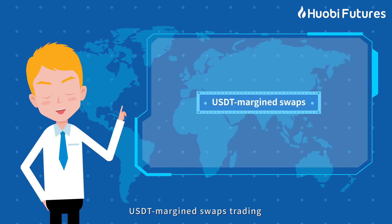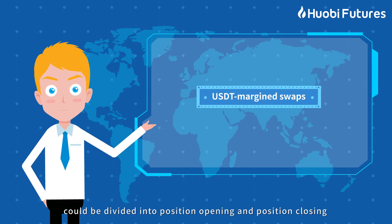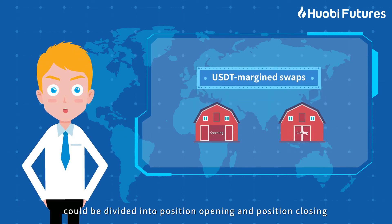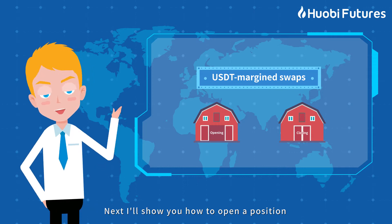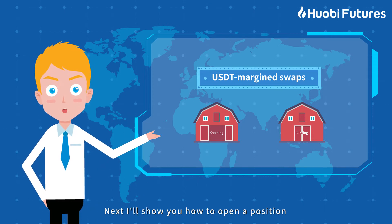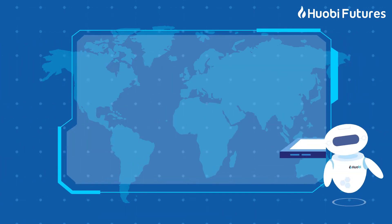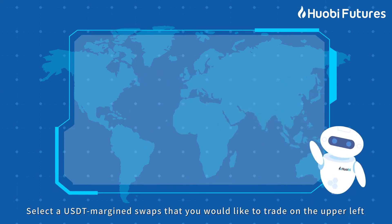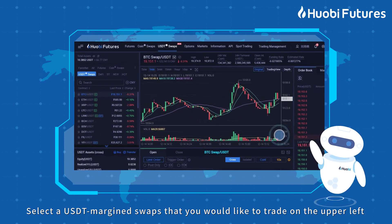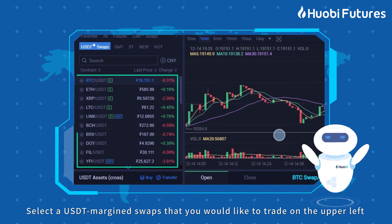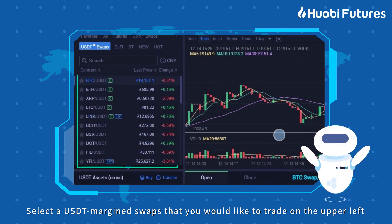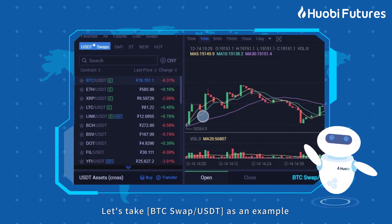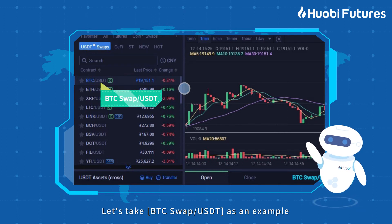USDT Margin Swaps trading can be divided into position opening and position closing. Next, I will show you how to open a position. Step 1: Select an asset to trade. Select the USDT Margin Swaps that you would like to trade on the upper left. Let's take BTC Swap USDT as an example.